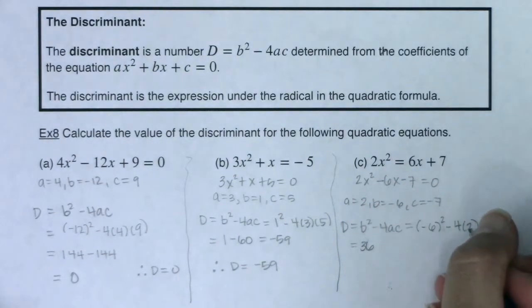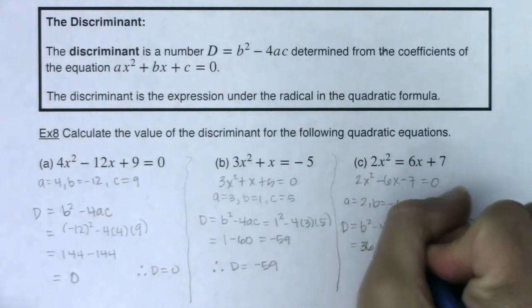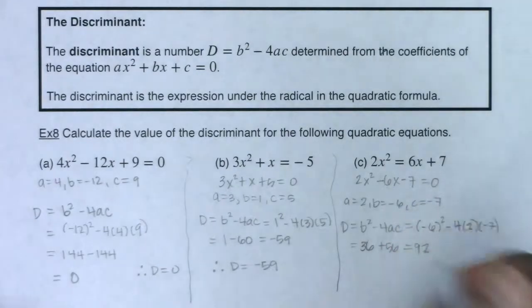4 times 2 is still 8. 8 times negative 7 is negative 56, but we are subtracting that. So this should be plus 56, which is 92.